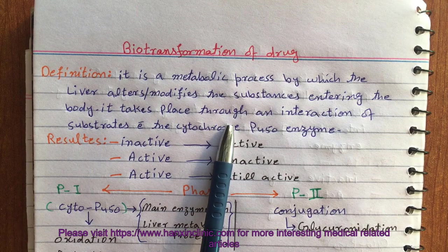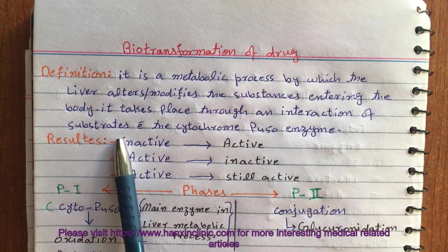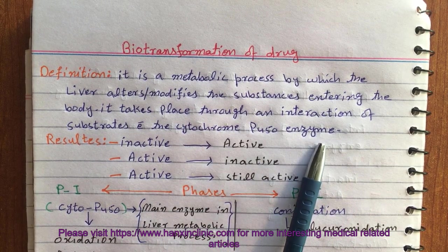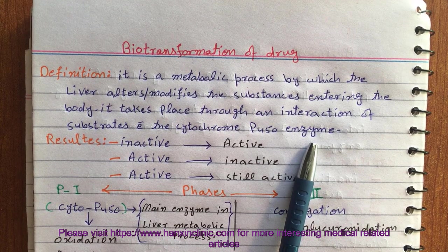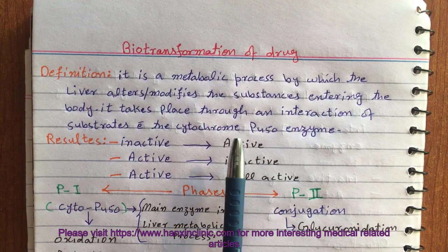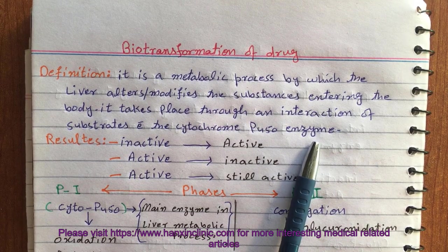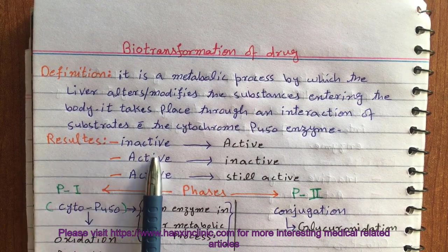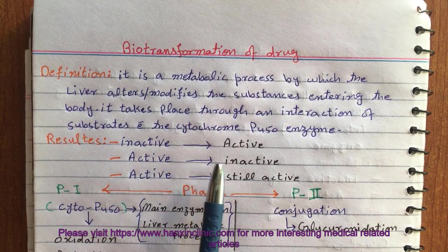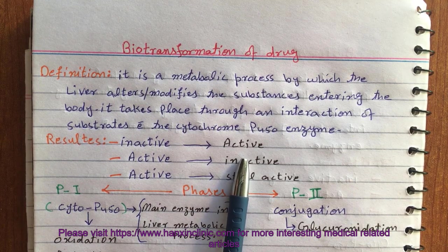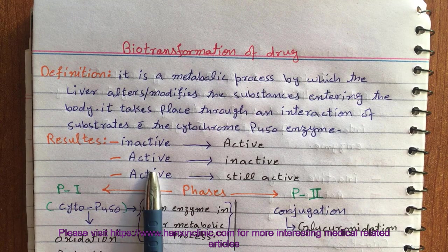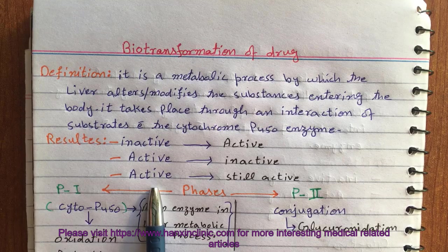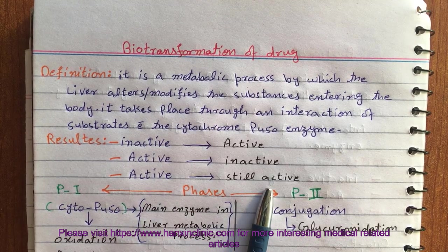This process takes place through an interaction of substrates with the cytochrome P450 enzyme — that means our liver will do this with the help of cytochrome P450 enzyme. As a result of biotransformation, an inactive drug can convert into its active metabolites, an active drug can convert into its inactive metabolites, or an active drug can convert into its active metabolites.